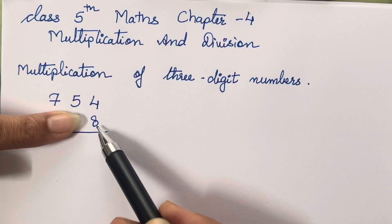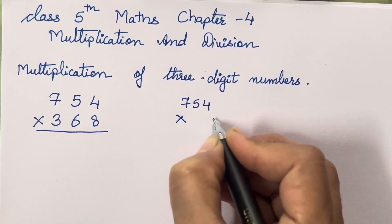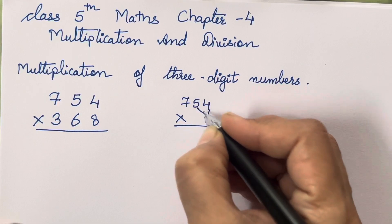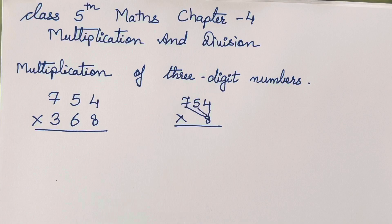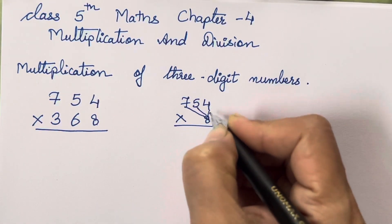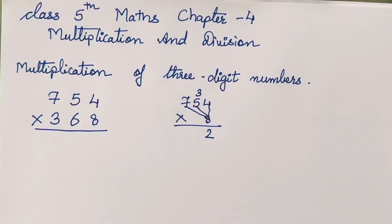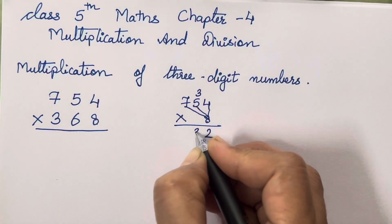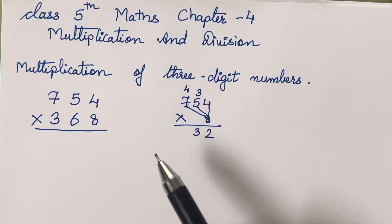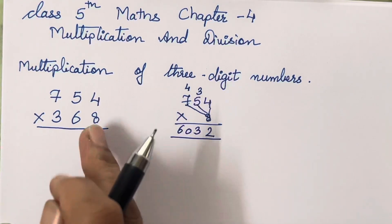After this step, you have to multiply in this pattern — first with 4, then 5, then 7. So 8 × 4 = 32. 8 × 5 = 40, plus 3 = 43. 8 × 7 = 56, plus 4 = 60. So you are done multiplying with the digit 8.